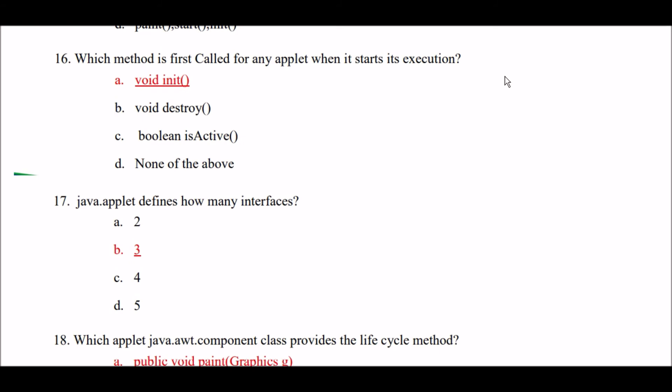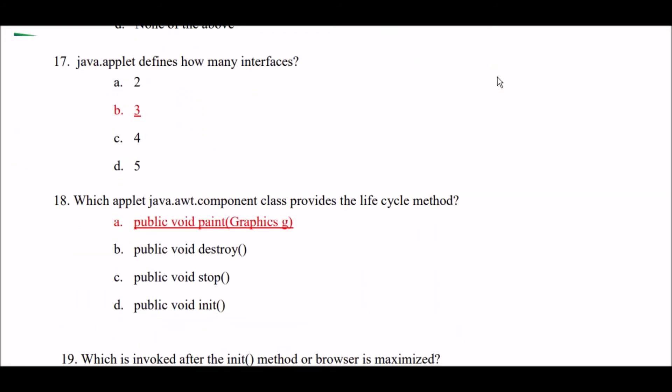Which method is first called for any applet when it starts its execution? Option A: void init method. Option B: void destroy method. Option C: boolean isActive method. Option D: none of the above. Right answer is Option A — void init method is first called for any applet when it starts its execution.